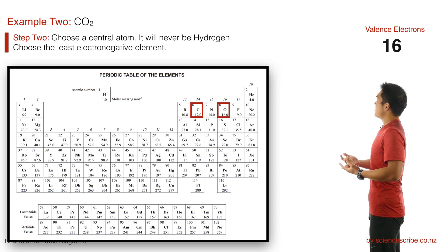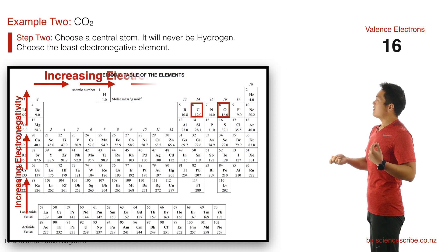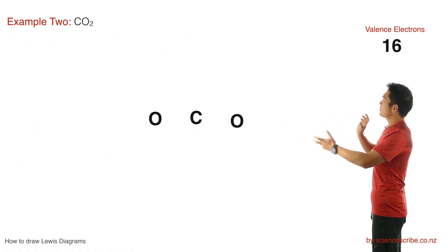After that I'm going to choose a central atom. My choice is between the carbon and the oxygen, and carbon is the least electronegative one, so we're going to put carbon in the middle, and we're going to put the two oxygens around it.